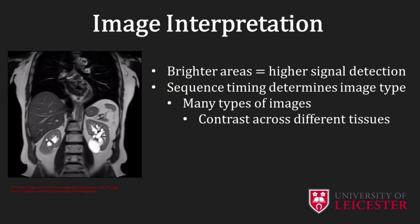In MRI images, the brighter the regions in the image, the higher is the signal intensity detected. The sequence type determines the type of image that is produced. There are many types of images that can be produced by MRI to distinguish and examine different types of tissues. The three main types of MRI images will be discussed in the next slide.